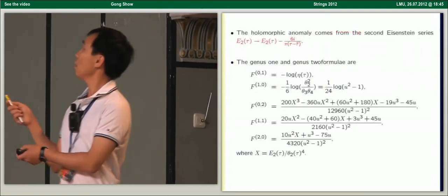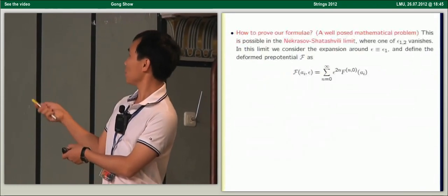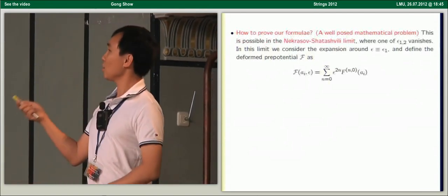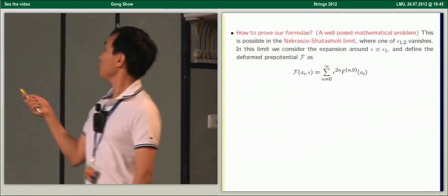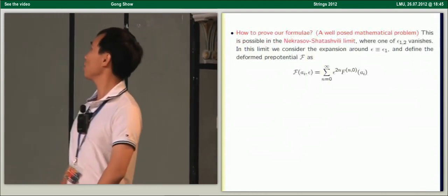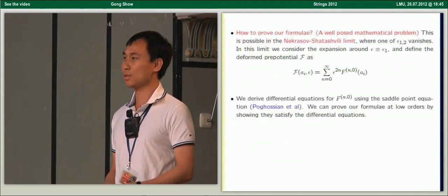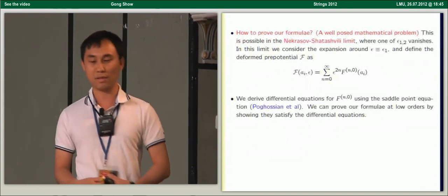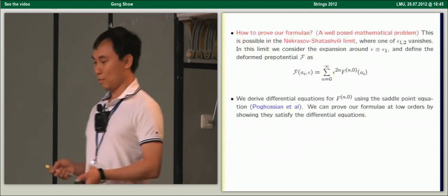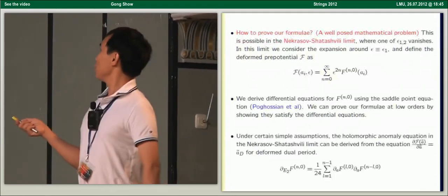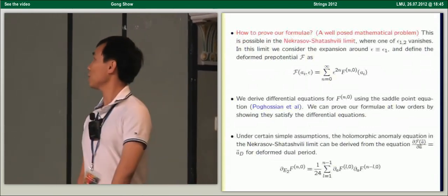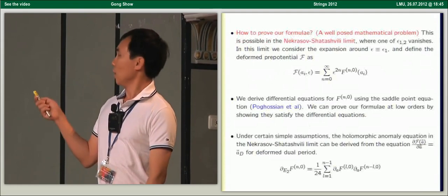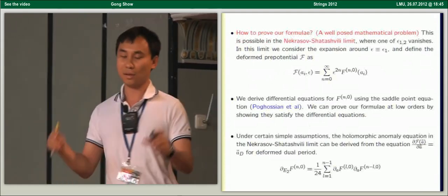I know of two ways to compute the refined topological string. One is the A-model method by the refined topological vertex. Another is to use the B-model method of generalized holomorphic anomaly equations. Our result is to use the generalized holomorphic anomaly equations and boundary conditions at singular points of the moduli space to compute gravitational couplings, providing formulas that sum up all instanton contributions to a given genus. We also generalize to the case with matter. In the Nekrasov-Shatashvili limit, one can use saddle-point methods to derive differential equations, and we can prove our formula satisfies these equations and also satisfies the holomorphic anomaly equations.